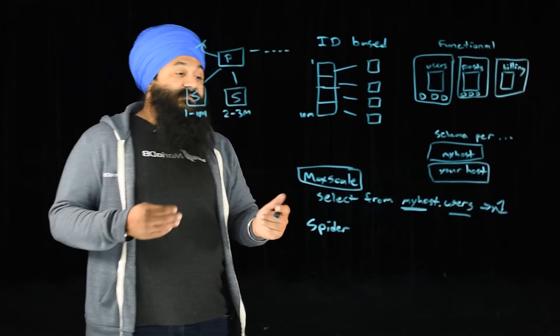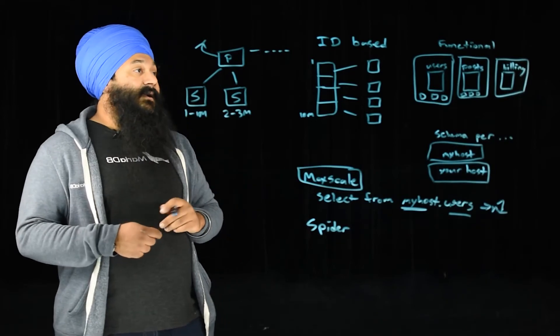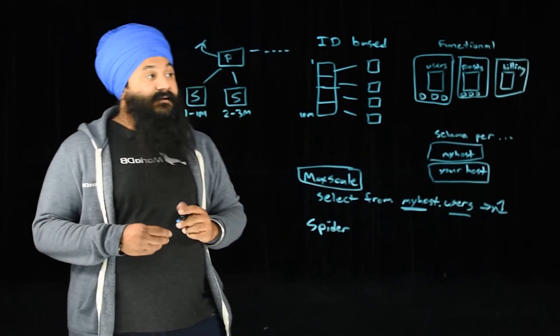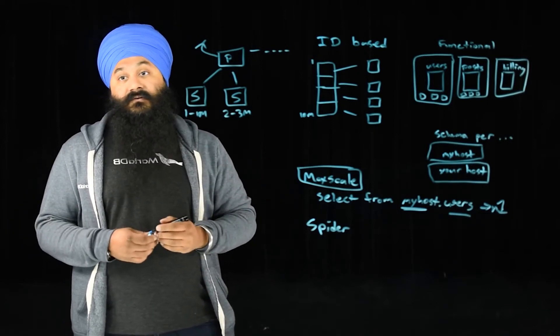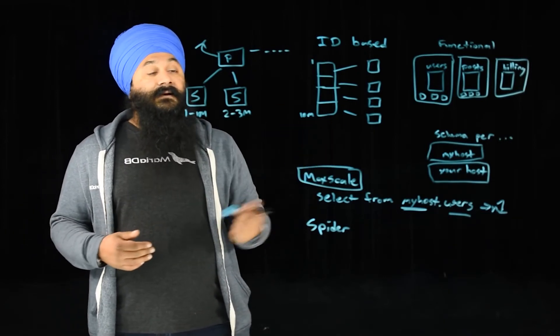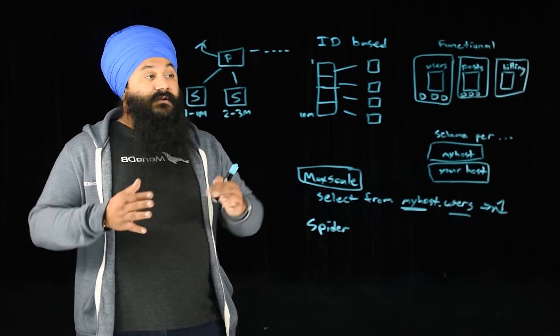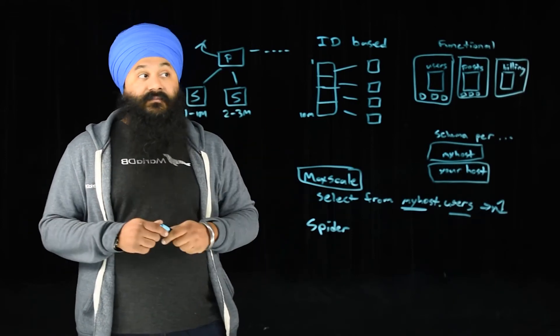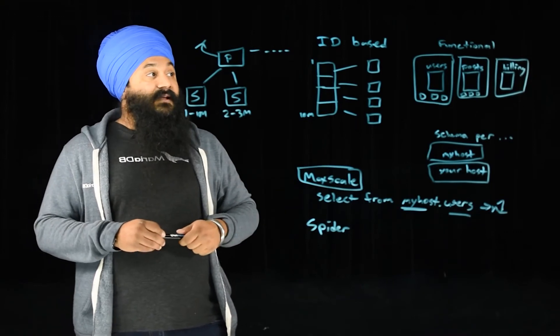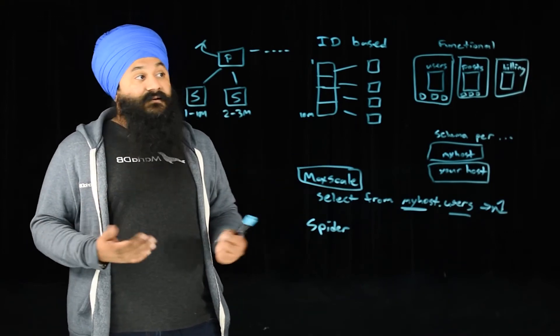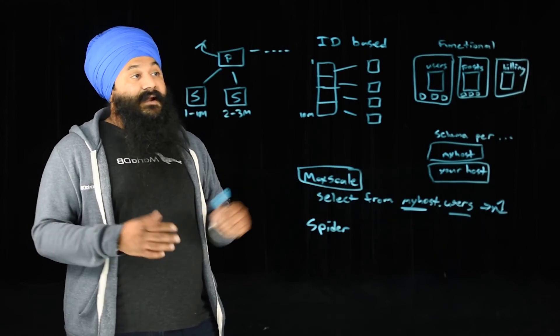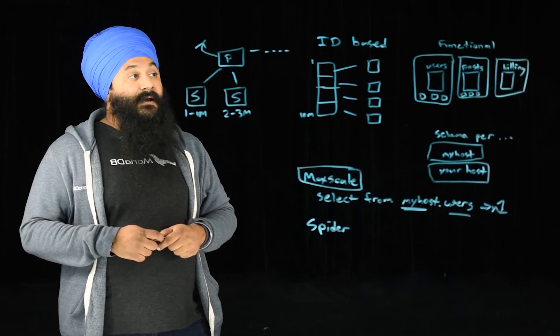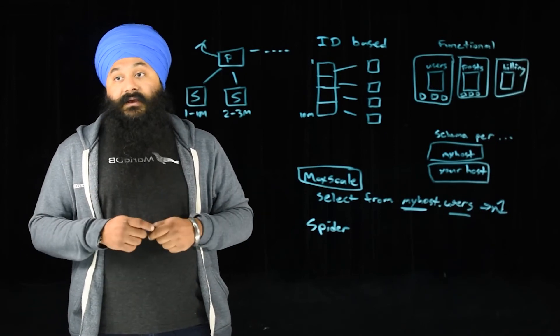So it sort of obfuscates between MaxScale and Spider this type of sharding work that can be done. And traditionally you had to do within your application and know where to address the data. Now you can actually partition across servers. You can move different functions to other databases. You can do cool things like maybe you have some compliance needs where data needs to live somewhere else. But now you can pull it back into your primary database so that you're not having to make major application changes.